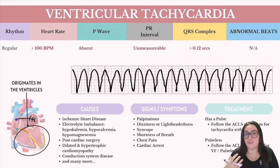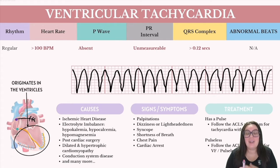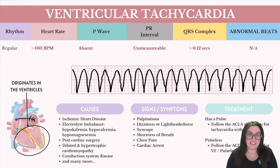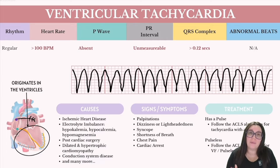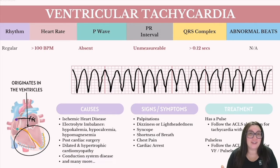Ventricular tachycardia, also known as VTAC or VT, is a type of rapid heart rhythm that starts within the ventricles. It can occur in the absence of any heart disease and in the presence of structurally normal hearts — this is typically referred to as idiopathic ventricular tachycardia. VT is considered primarily lethal because it disrupts the normal rhythm and pumping efficiency of the heart, which can drastically reduce blood flow to the heart and other vital organs.